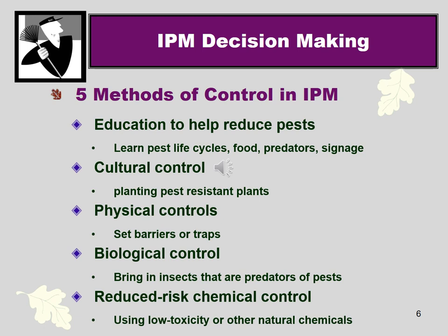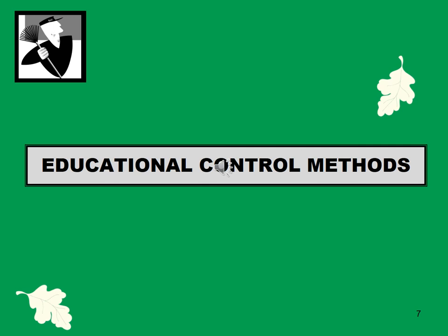Those questions correlate directly to five methods of control in IPM. First, educating — learning about the pests and their life cycles, what they eat, what their predators are, and educating others too with signage in public situations. Second, cultural control — for example, planting pest-resistant plants. Third, physical controls — barriers or traps to exclude the pest. Fourth, biological control — bringing in insects that are predators of pests. Fifth, reduced-risk chemical control — always starting in IPM with the lowest toxicity chemical first, including natural chemicals.